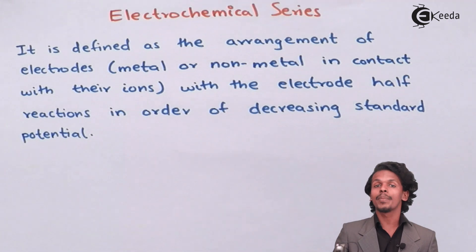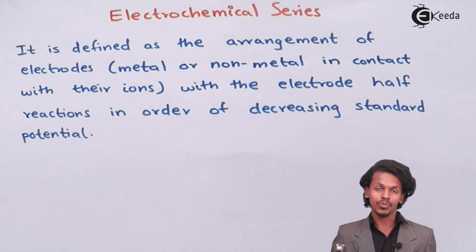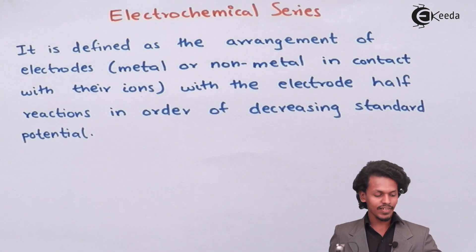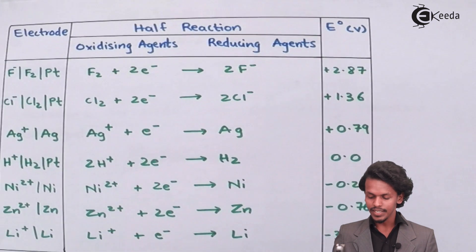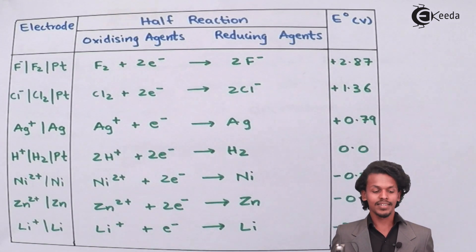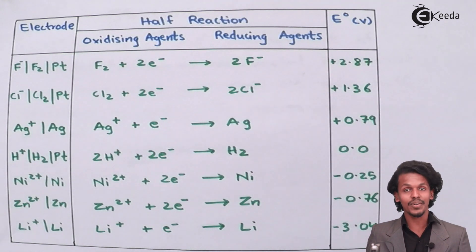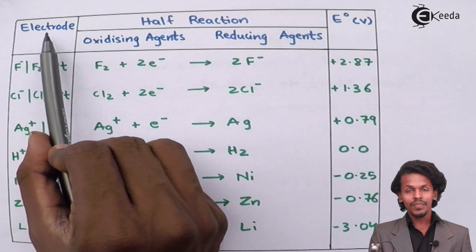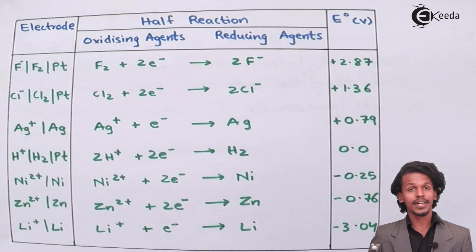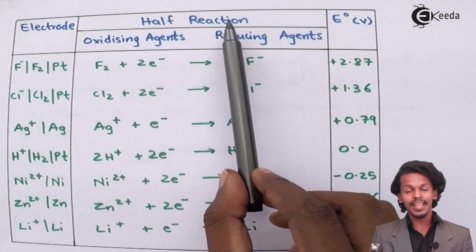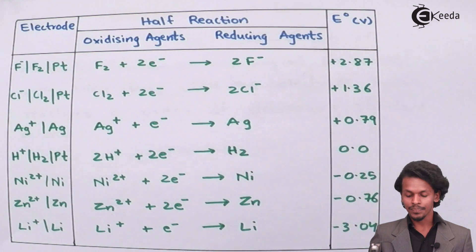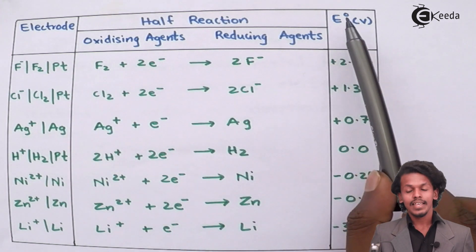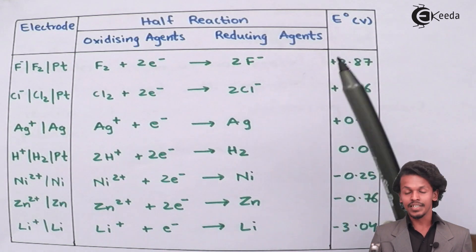Depending on that, we can designate a particular electrode as the anode or as the cathode. In the example arrangement shown, the electrodes are listed on the left-hand side with their corresponding half-reactions, and all of these reactions are reduction reactions. The reduction potential E⁰ is represented in volts.